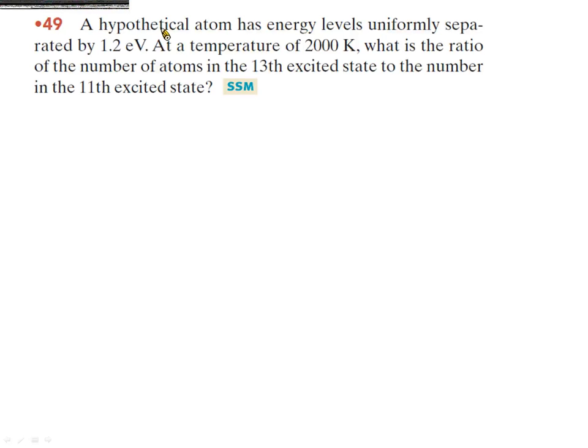A hypothetical atom has energy levels uniformly separated by 1.2 eV. At the temperature of 2,000 K, what is the ratio of the number of atoms in the 30th excited state to the number in the 11th excited state? 假设有一个理论上的假想的原子这个原子它的能阶非常特别